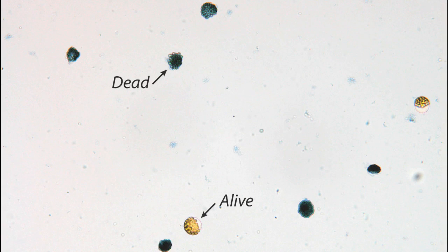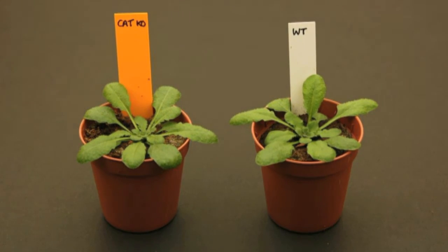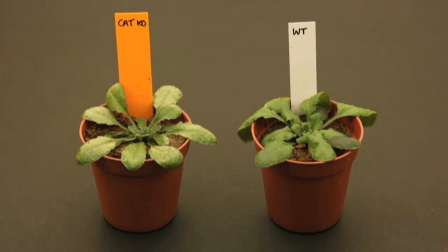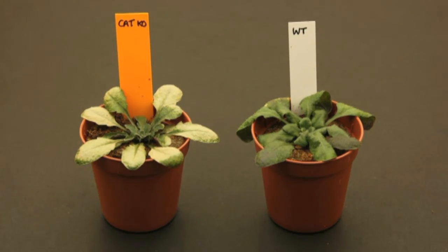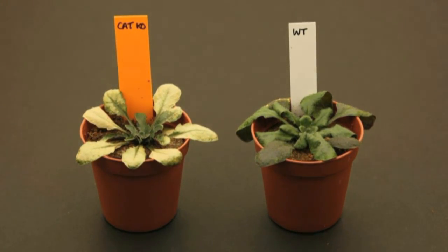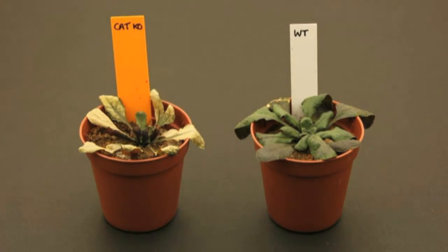These include heat or UV treatment that induce dose-dependent rates of cell death. Researchers also use spontaneous lesion mutants, controlled pathogen infections and plants lacking specific antioxidant systems, such as these catalase-deficient plants that undergo PCD under high-light conditions.